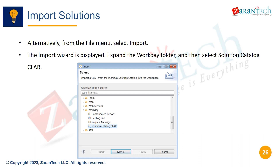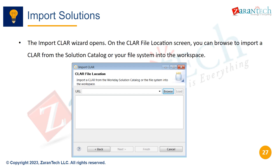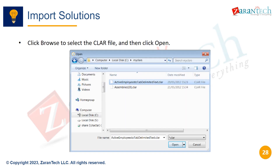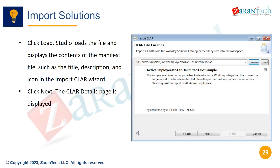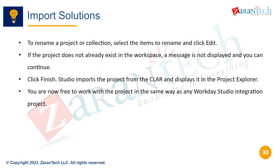In the import CLAR wizard, browse and select the CLAR file, then click Open to load the manifest details. Click Next to continue. Once the CLAR is loaded, the manifest details like title, description, and icon are displayed. Click Next to see the CLAR details page. On the CLAR details page, you can rename projects or collections by selecting Edit. Click Finish to import the project into the Studio workspace. You can now work with the imported project.